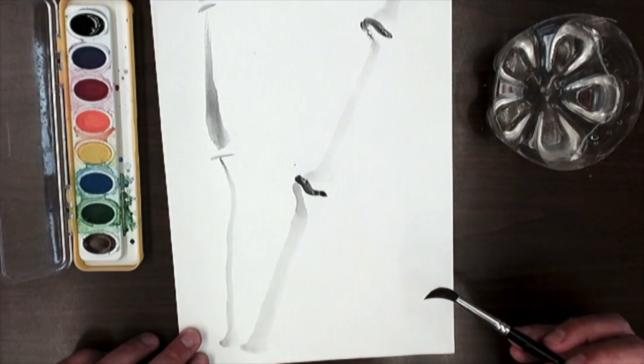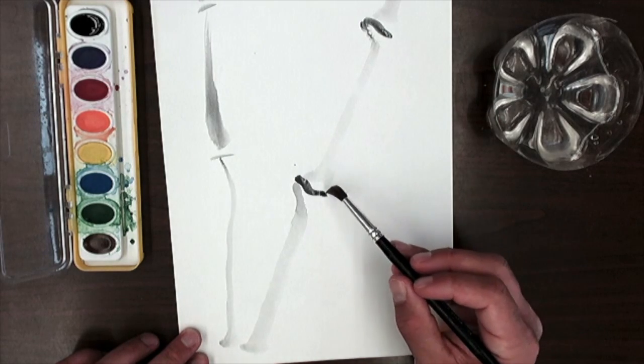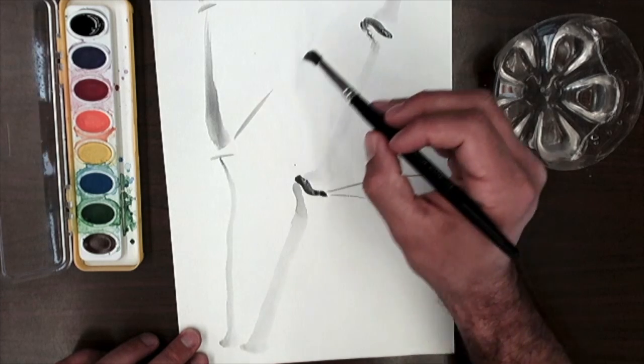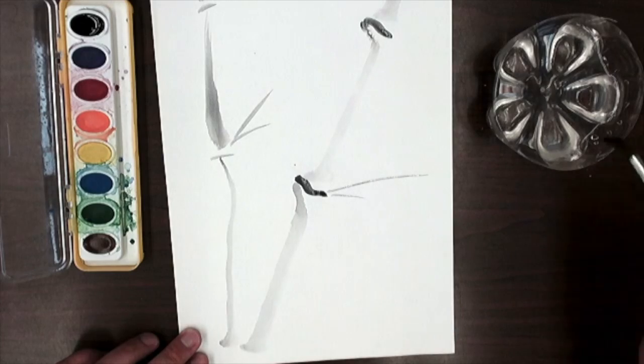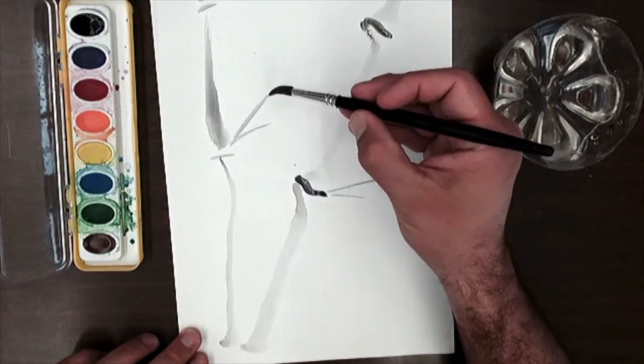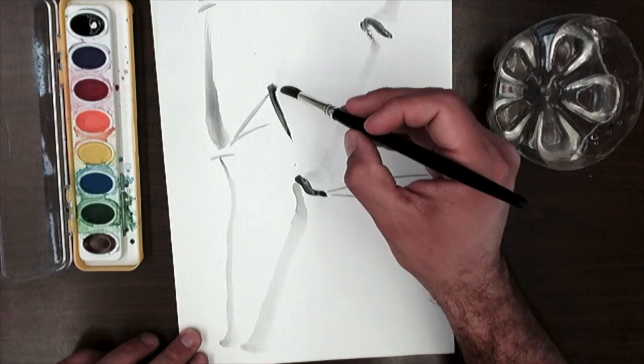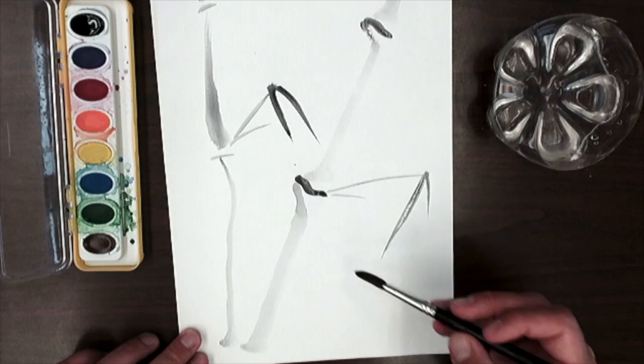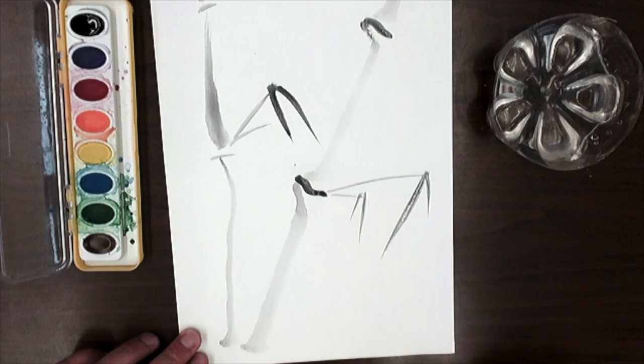After you've done your long stretches of bamboo, you can go in and add little tiny branches if you want. They're very skinny. Then off of those, you can even add a couple leaves. Here's how you do the leaves: just put your brush down and pull straight down. Put your brush down and pull it straight away. That's how you create it.